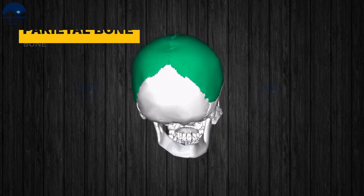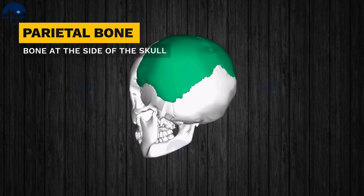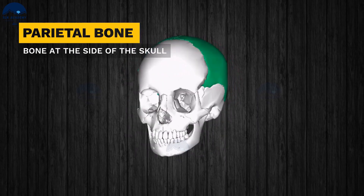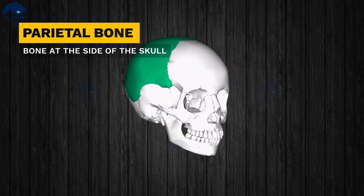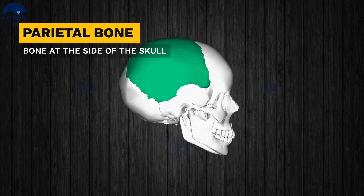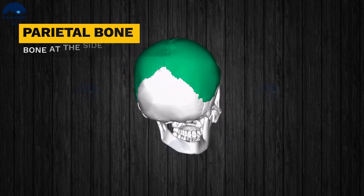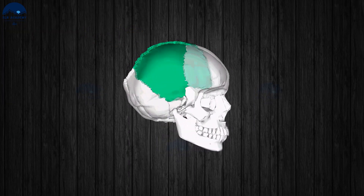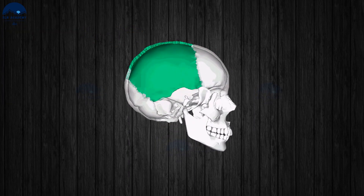Parietal bones. There are two parietal bones in the human skull which are joined at a fibrous joint. They are located at the sides and roof of the cranium.